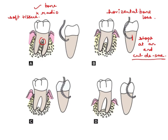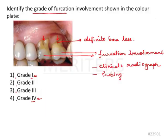In grade 3 furcation involvement, the inter-radicular bone is missing and the probe will pass through-and-through, which can be visualized on the radiograph. Grade 4 is the most severe form, where there is total bone loss which may or may not be covered by soft tissue, and is also radiographically evident.